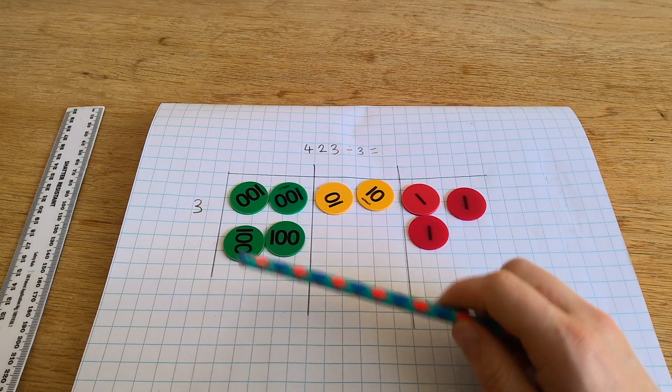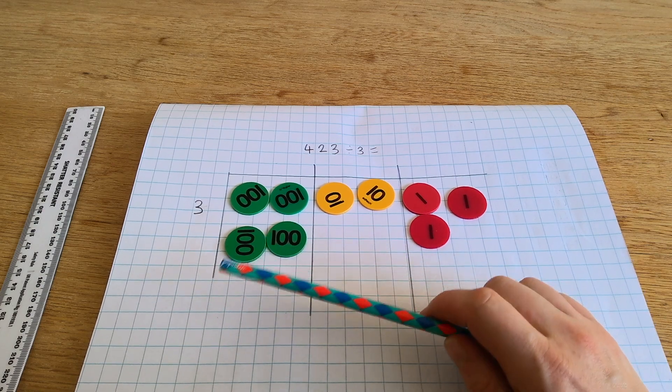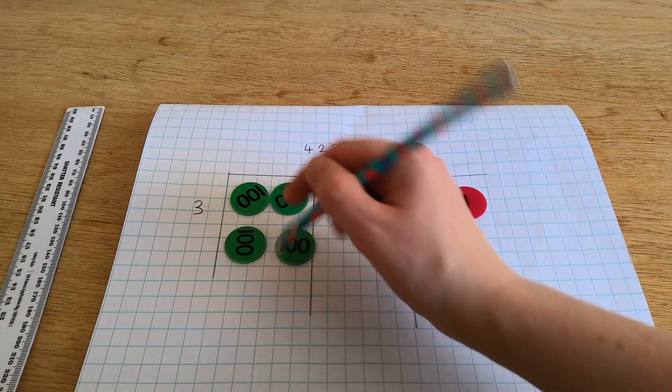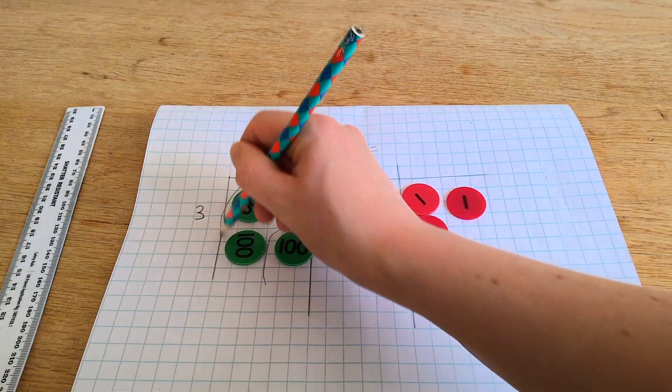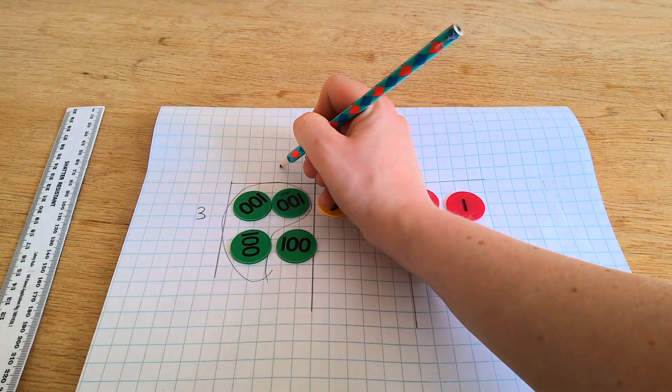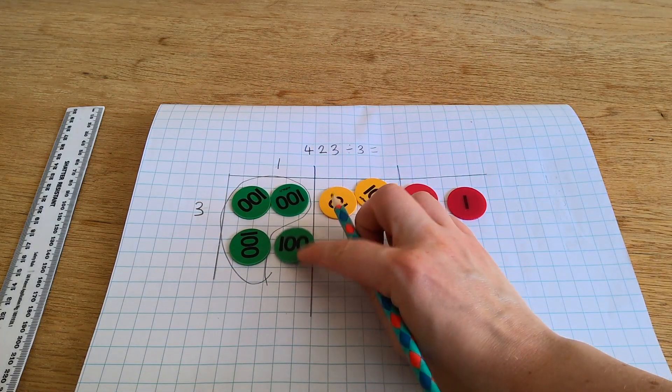I'm going to start with the digit at the greatest value. How many groups of 300s in my 400s? I've got 1 group of 300s with a remainder of 1.